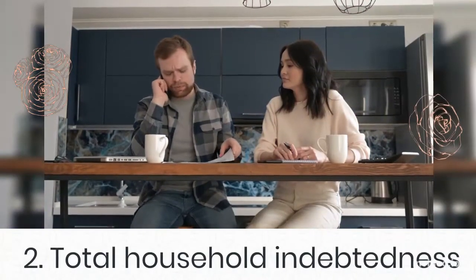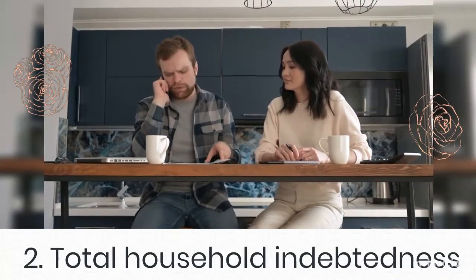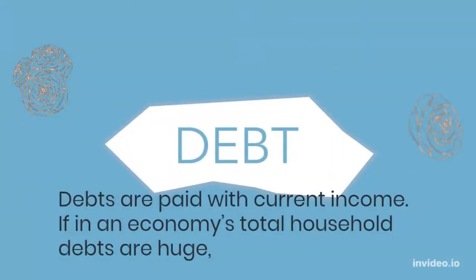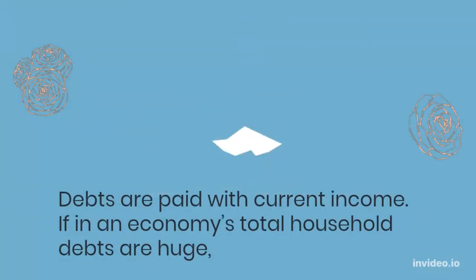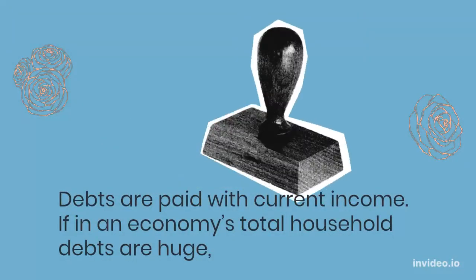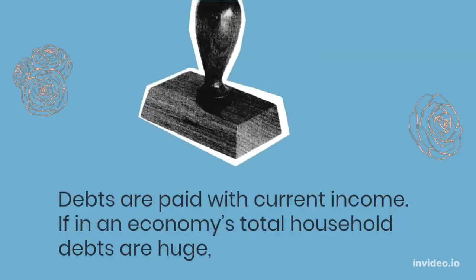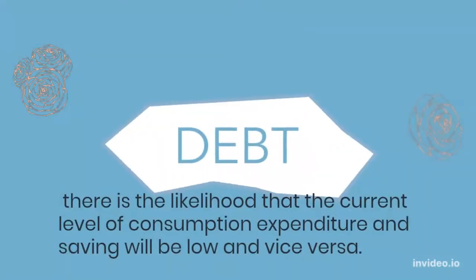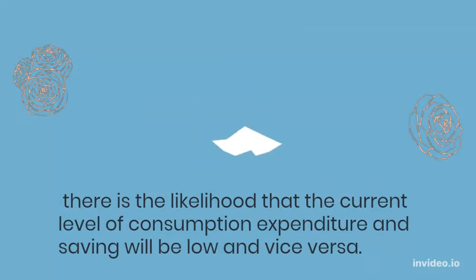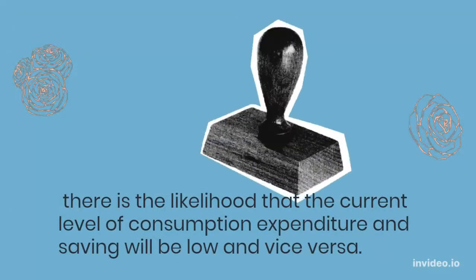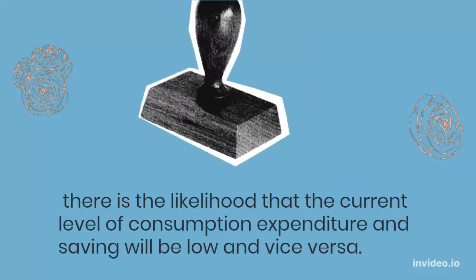Total household indebtedness: debts are paid with current income. If in an economy the total household debts are huge, there is a likelihood that the current level of consumption expenditure and saving will be low, and vice versa.